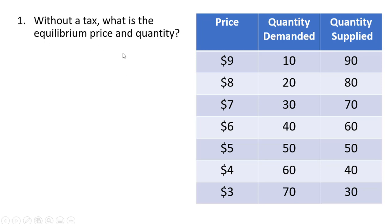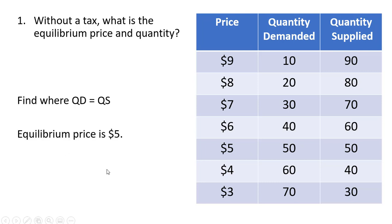Without a tax, what is the equilibrium price and quantity? We want to find where the quantity demanded equals the quantity supplied, and that occurs at 50, so that is going to be our equilibrium quantity, and the corresponding price is the equilibrium price.